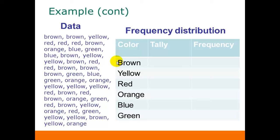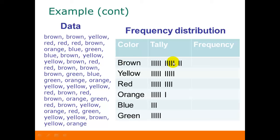So if we went through and did our tallies, that's what we would end up with. Now we can count the frequencies for each one: brown would have 12, yellow would have 10, red would have 9, orange 6, blue 3, and green 5. So our frequency distribution is the list of colors and the frequencies for each one.